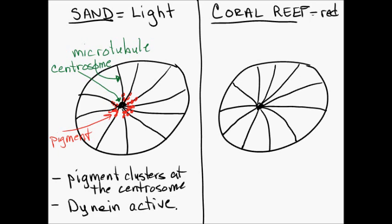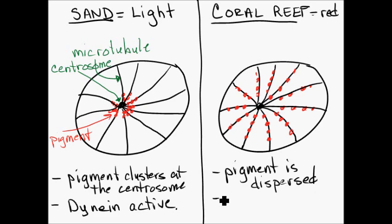Now the opposite is true when you're looking at the coral reef. In order for the cell to look red, the pigment has to be equally dispersed along the microtubules. And so as this pigment disperses away from the centrosome, the cell begins to take on a red color. And so the scales that contain these cells begin to look red, and this happens when the fish is over the red coral reef. It sees the red, this goes through the nervous system, and that is relayed to the cells. So in this case, the pigment needs to be dispersed away from the centrosome. And in order to do that, we need that plus end directed motor to be active, which is kinesin.